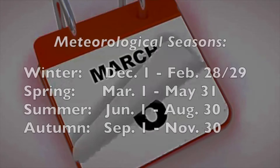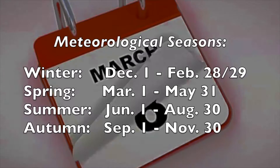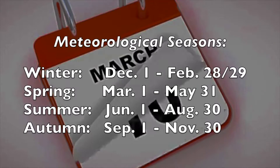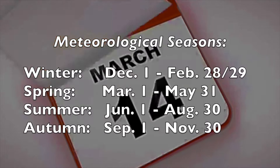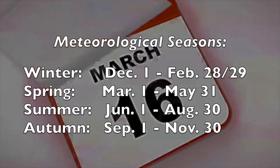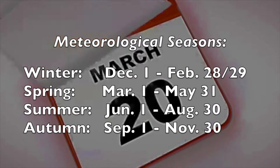And also June 1st would be the start of meteorological summer. So it's really just a method of bookkeeping between astronomical season changes and meteorological seasons.